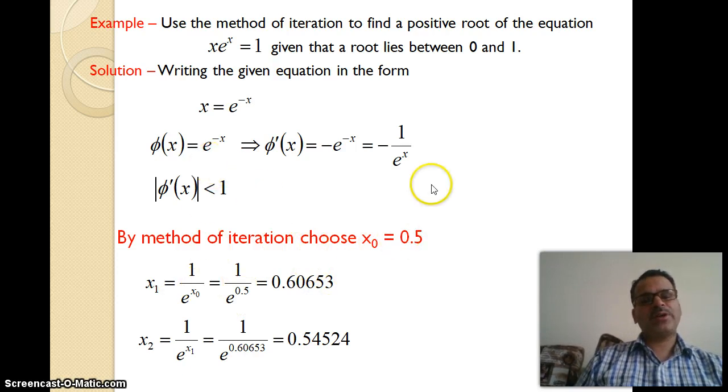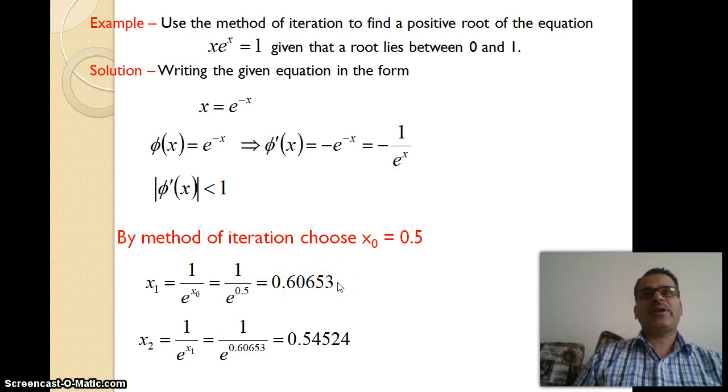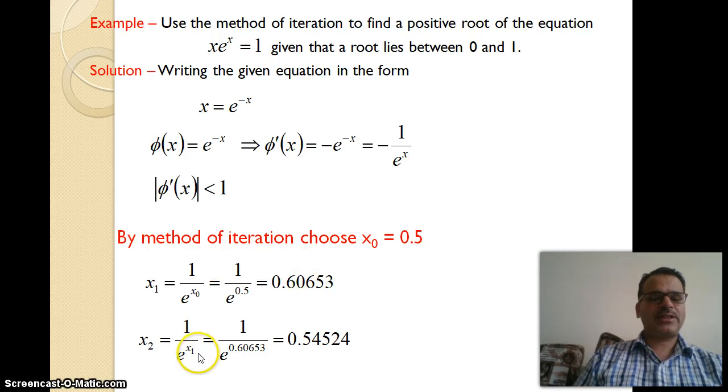φ(x) = 1/e^x. First approximation: x₁ = 1/e^(x₀) = 1/e^0.5 = 0.60653. For the second approximation x₂, we put this value: 1/e^(x₁) = 1/e^0.60653 = 0.54524. That's why it's known as the iterative method - the first approximation is put in the second.